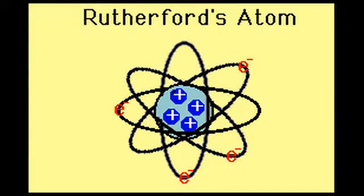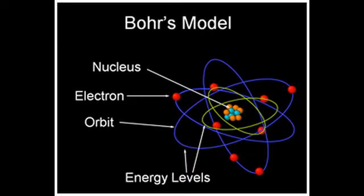Rutherford updated this model in 1911. He stated that almost all the mass of an atom and all of its positive charges were concentrated in a central atomic nucleus surrounded by the electrons. Niels Bohr made the model we use now. He made this model in 1913. Bohr proposed that the electrons went to an orbit around the nucleus.